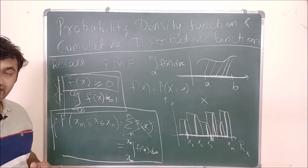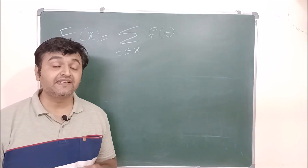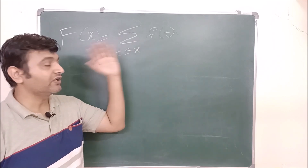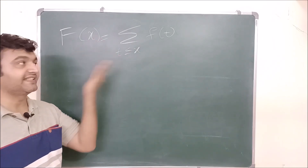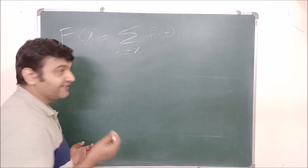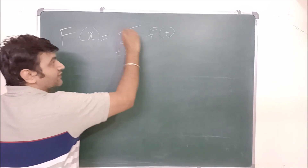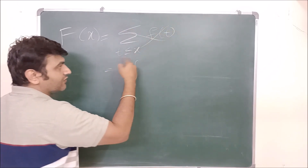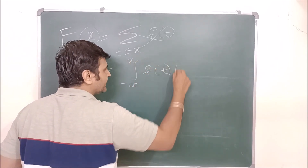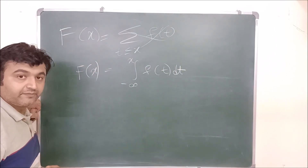So we have seen PDF, and now the same thing comes for the CDF. How did we define CDF for a discrete random variable? It was F(x) as a summation — you take all possible values before this x, so t ≤ x. Now you know the continuous version of summation is integration. So for a continuous random variable, CDF is defined as the integral from minus infinity to x of F(t) dt. This is nothing but the CDF for a continuous random variable.